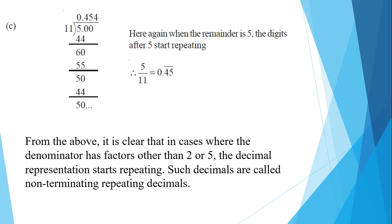From the above examples, it is clear that in cases where the denominator has factors other than 2 or 5, the decimal representation starts repeating. There is no termination — these are non-terminating, repeating decimals.